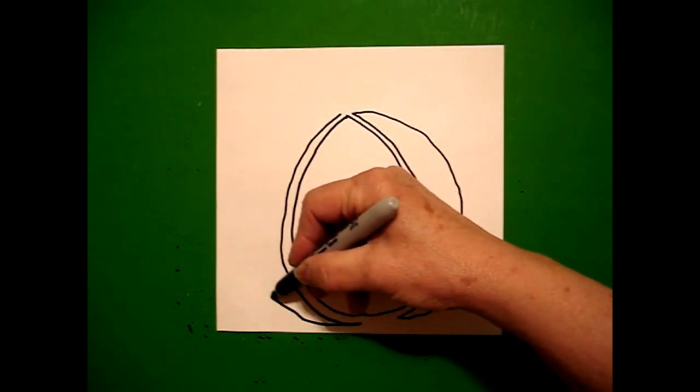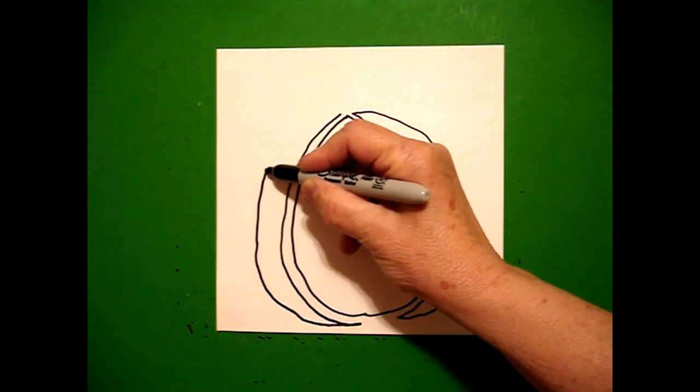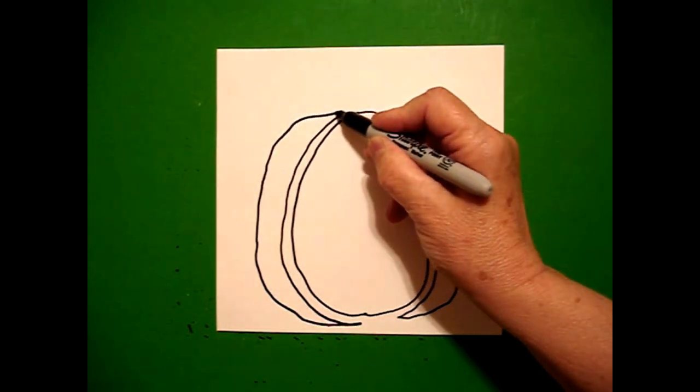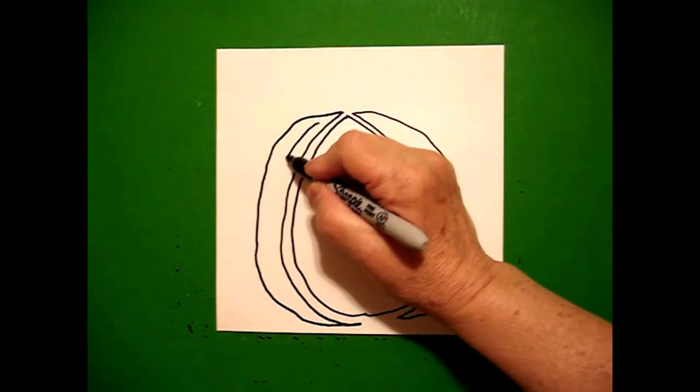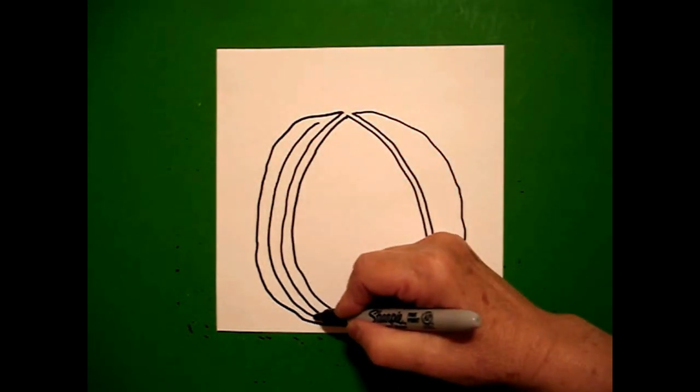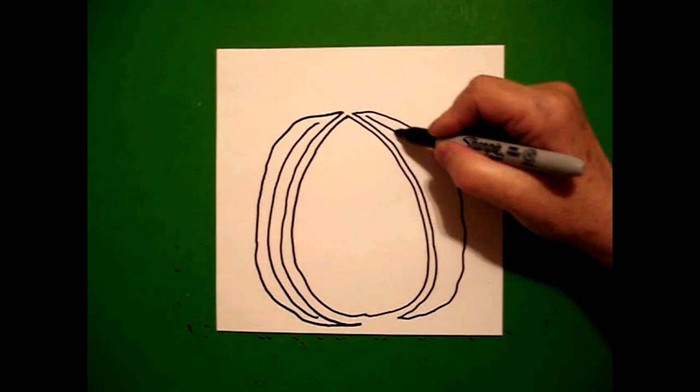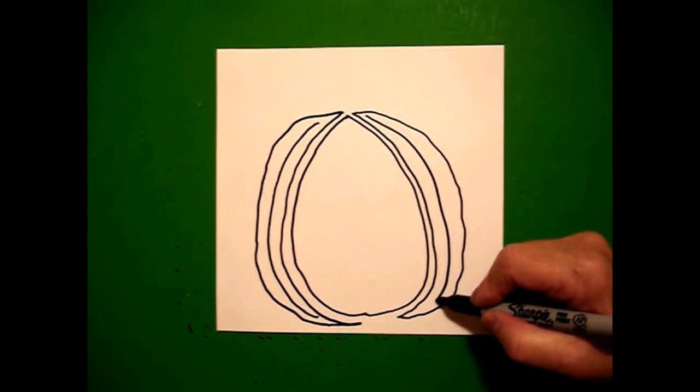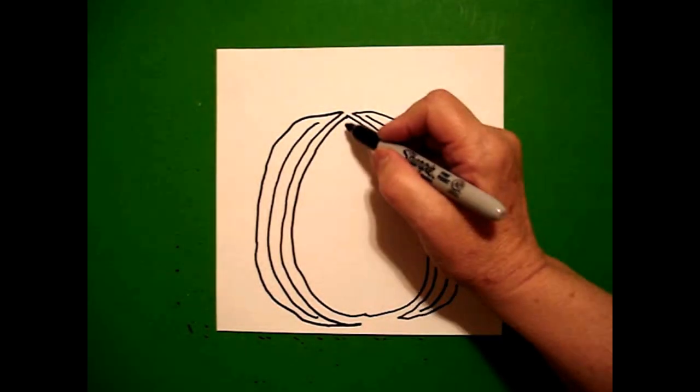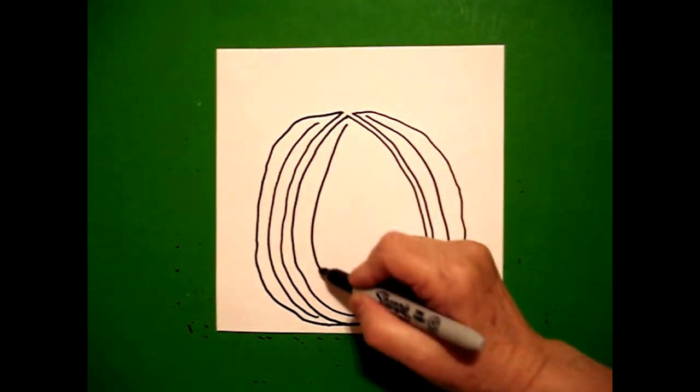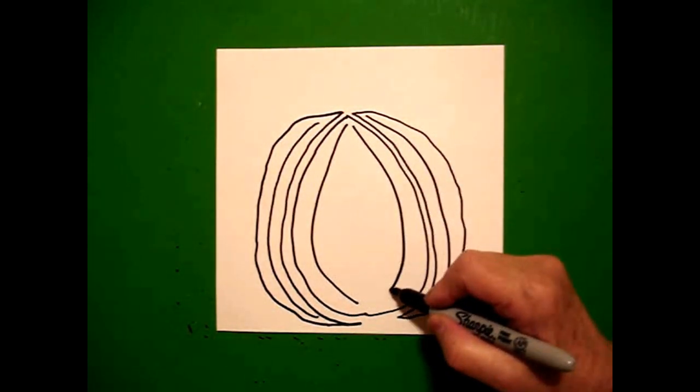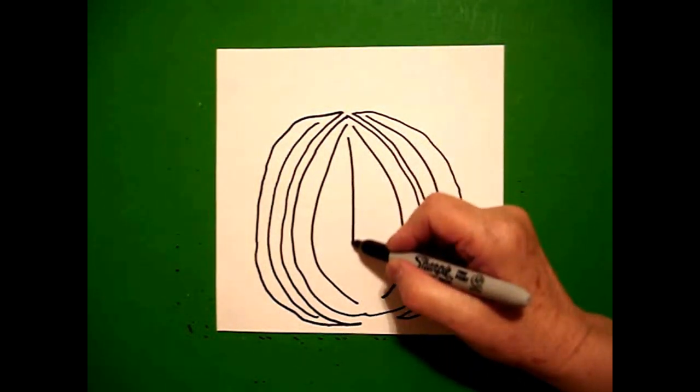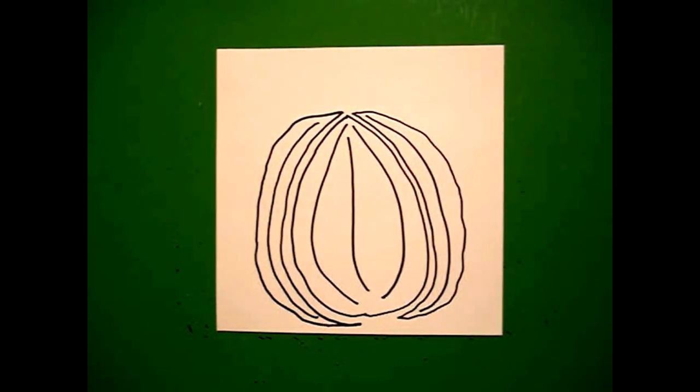I'm going to draw one curved line down on the left, one curved line down on the right, and I'm going to draw a curved line in the center on the left, curved line on the center on the right, and a slightly curved line in the middle.